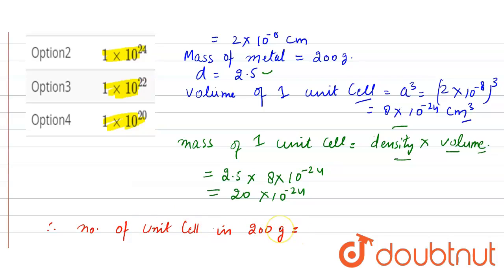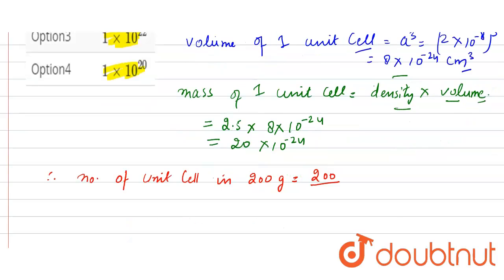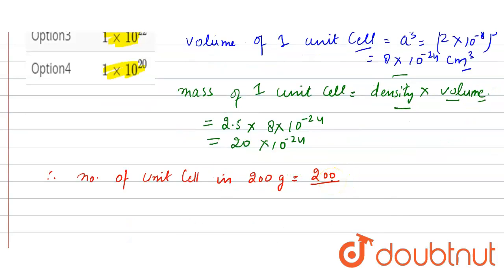is equal to 200 divided by mass of 1 unit cell which is 20 × 10^-24. So from here we get 10 × 10^24 or 1 × 10^25 unit cells.